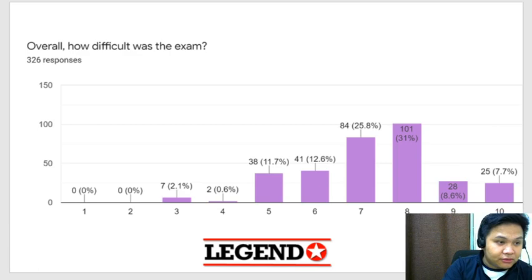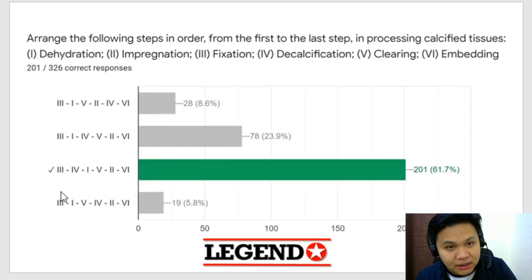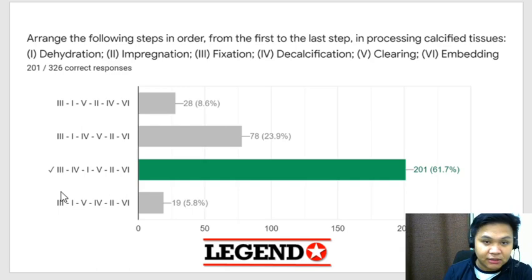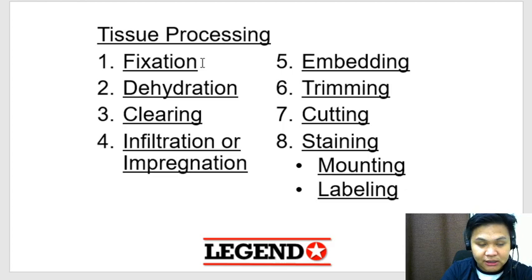Let's start. So this is the first question: arrange the following steps in order from the first step to the last step in processing calcified tissue. Ang tinatanong dito yung proper sequence ng tissue processing. Ang sagot natin: 3, 4, 1, 5, 2, and 6. These are the steps of tissue processing — please memorize this in the proper order.